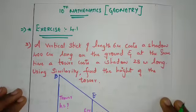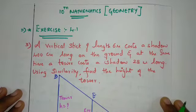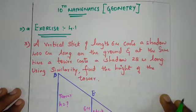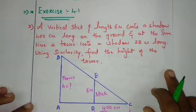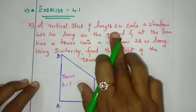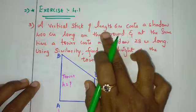A vertical stick of length 6 meters casts a shadow 400 cm long. I'm going to diagram this question and explain. A vertical stick of 6 meters length.